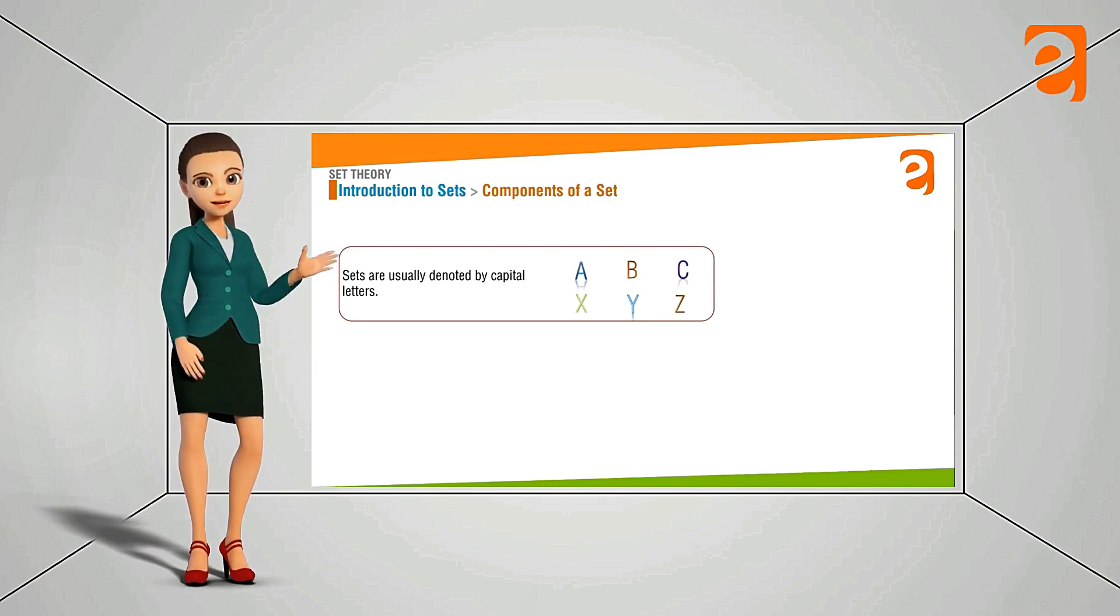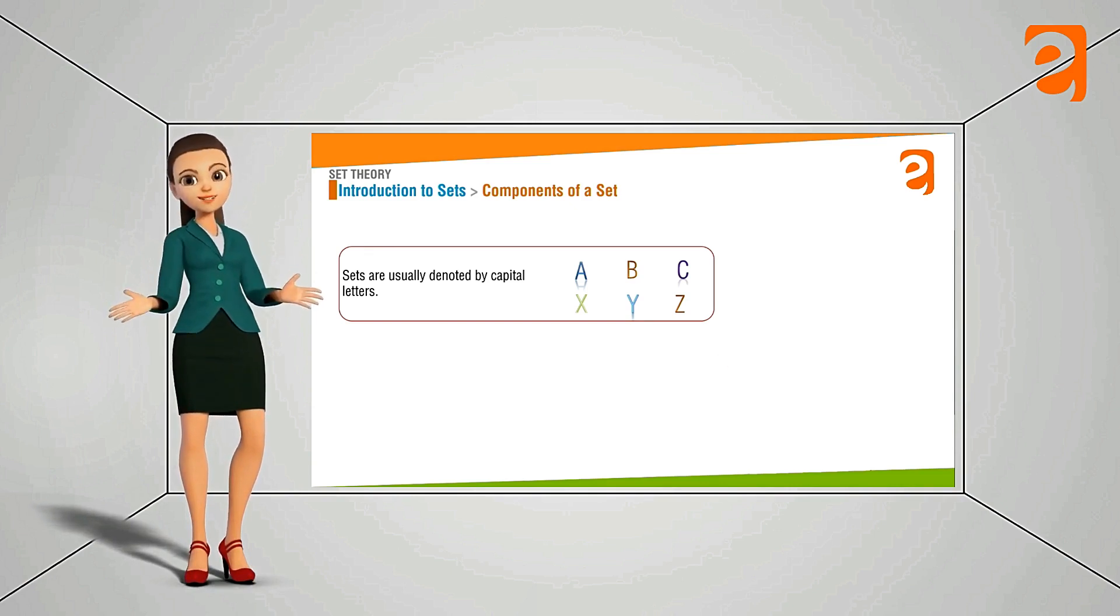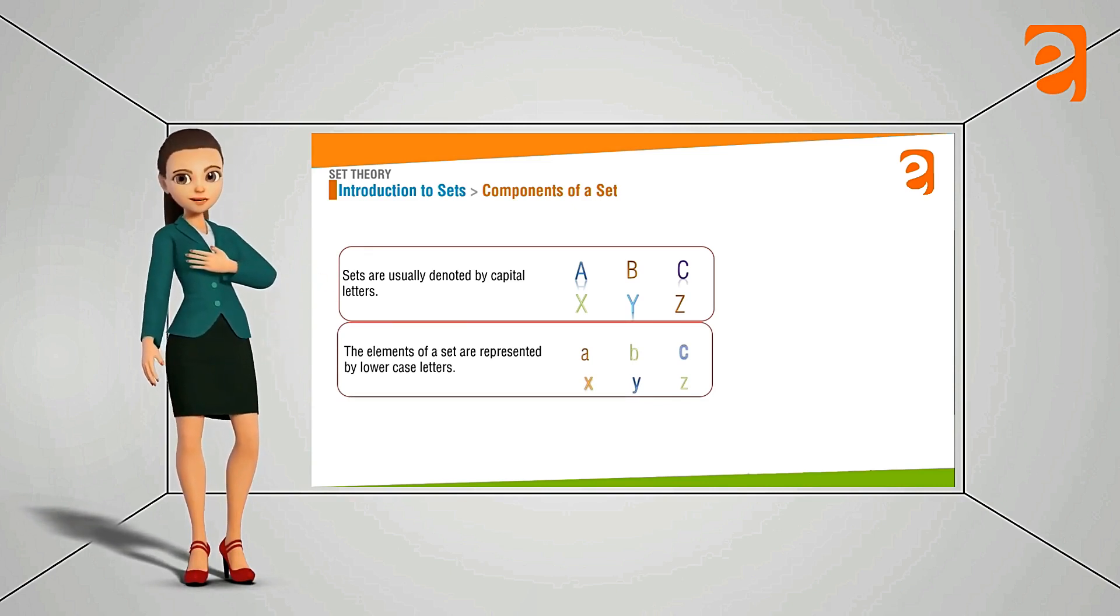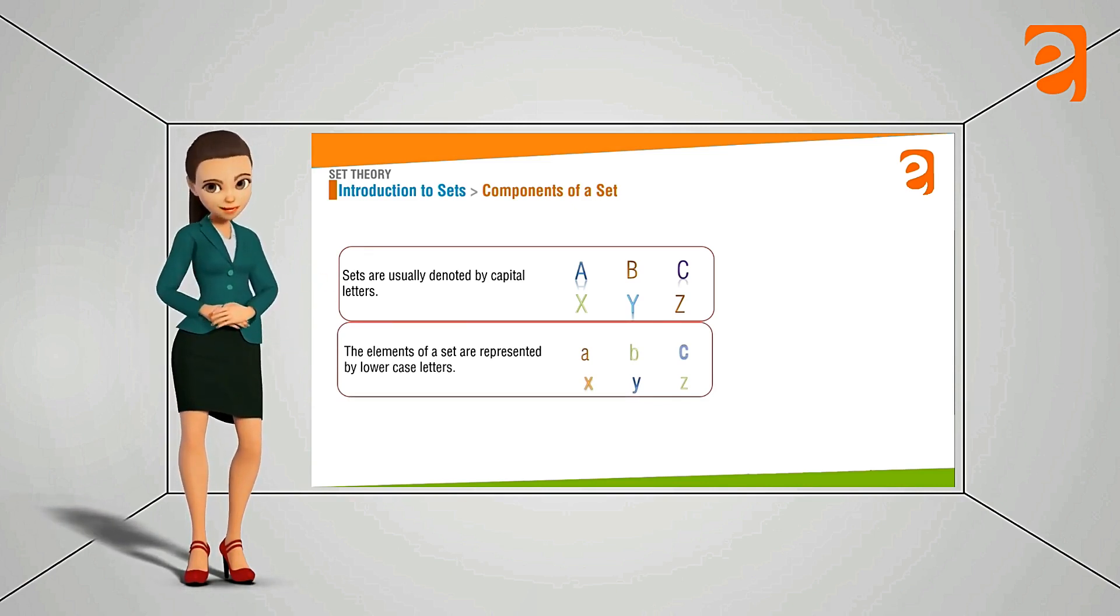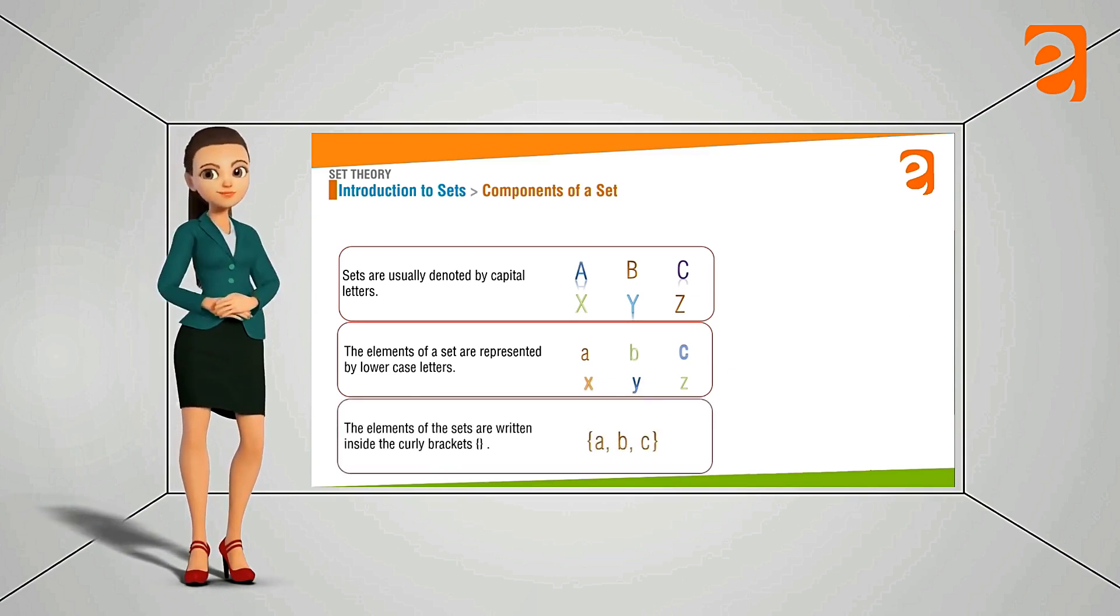Set is usually denoted by the capital letters either by A or B or C or any of the alphabets of your choice. So we used to denote the set by the capital letters and the elements which we are keeping inside the set they are usually denoted by the small alphabets. So A, B, C, X, Y, Z anything of your choice.